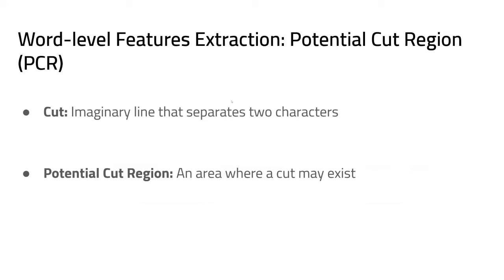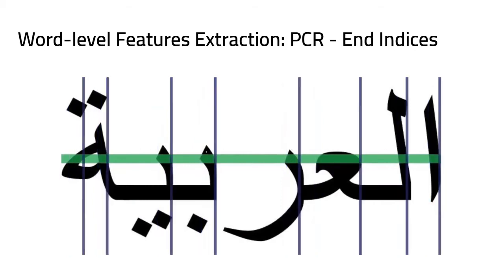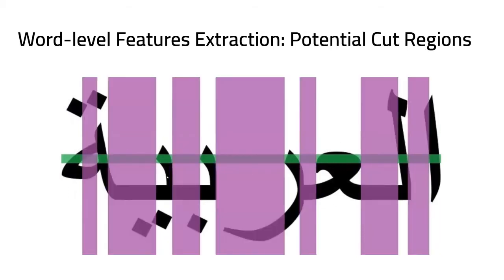The last feature extracted is the potential cut region, or PCR. A cut is any imaginary line separating two characters, so a PCR is an area where a cut may exist between two characters. To find the PCR, we traverse the LMT from right to left. Whenever we find a black pixel followed by a white pixel, that is the start of a PCR; a white pixel followed by a black pixel marks the end.